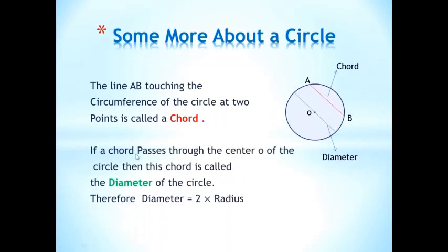If a chord passes through the center of the circle, like this one, then this chord is called the diameter of the circle. This one is the diameter. A line passing through the center touching the circumference at two points. Therefore, diameter is equal to two times the radius, because from O to this point is the radius. So, diameter is double the radius.